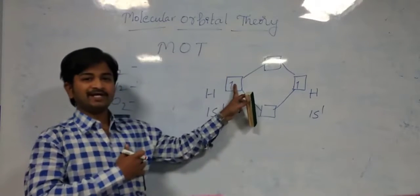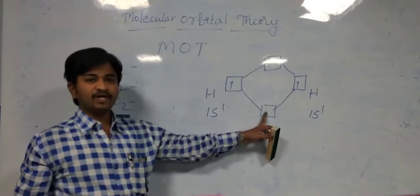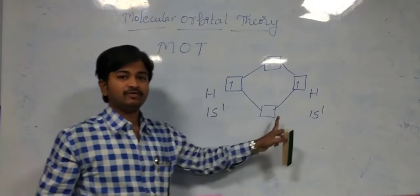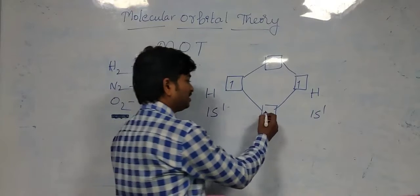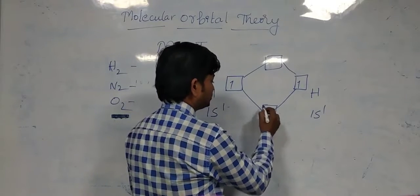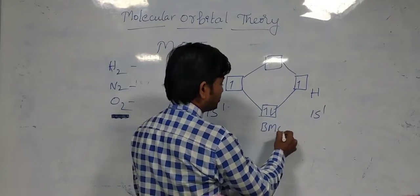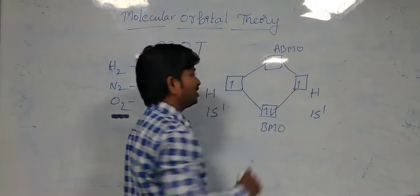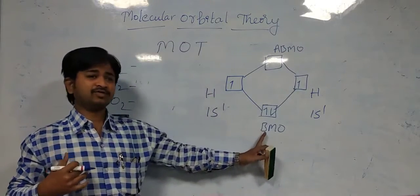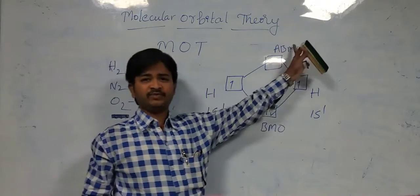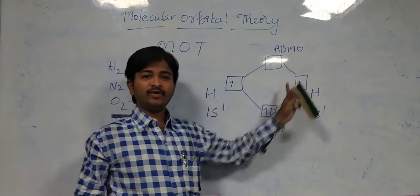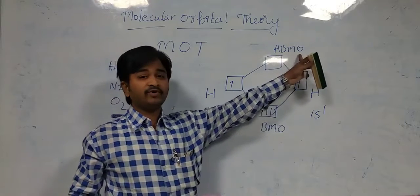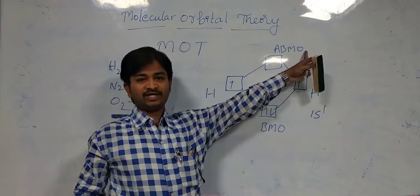This is a bonding electron — it will go to the bonding molecular orbital (BMO). This is also a bonding electron, so it will also go to the bonding molecular orbital. We have a bonding molecular orbital (BMO) and an anti-bonding molecular orbital (ABMO). BMO is the bonding molecular orbital and ABMO is the anti-bonding molecular orbital.